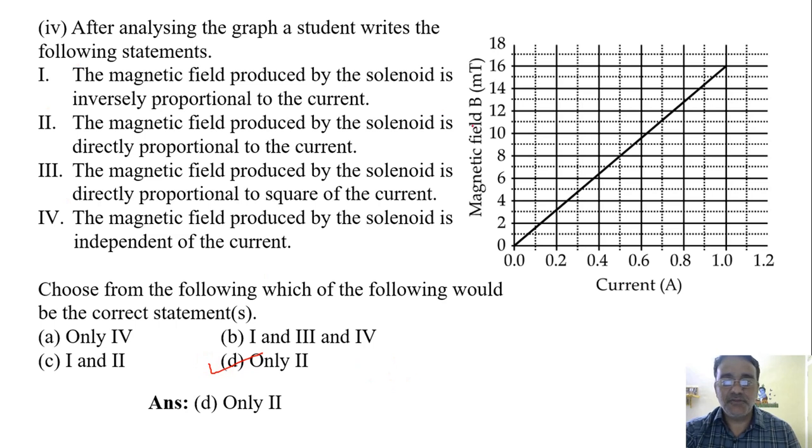Any doubt in this question? No, sir. Inversely means you will get a straight line, but in decreasing order. The second one, second one is correct. Third one, just now I told, you will get like that. And fourth one is independent, so that is also wrong.